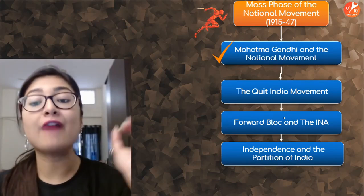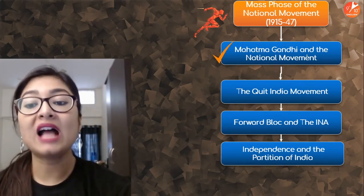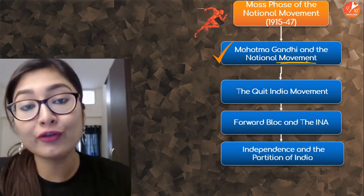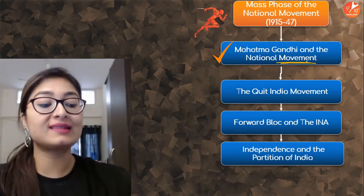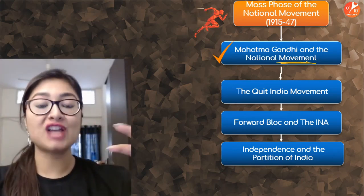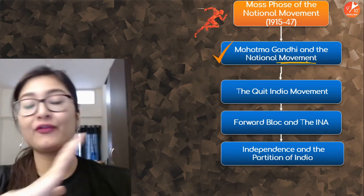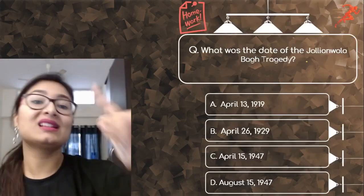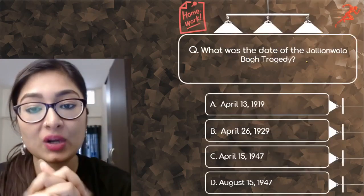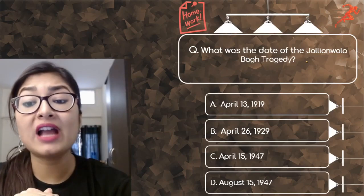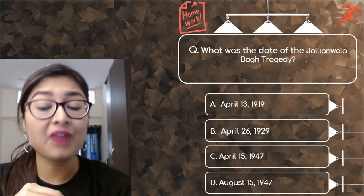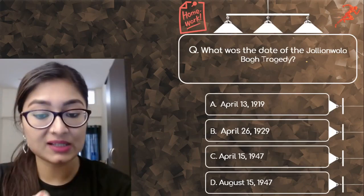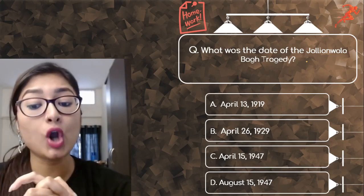With this session we have finished the first part — Mahatma Gandhi and the national movement — and the wave of nationalism that he brought. Now our homework question: what was the date of the Jallianwala Bagh tragedy? The options are April 13 1919, April 26 1929, April 15 1947, or August 15 1947.